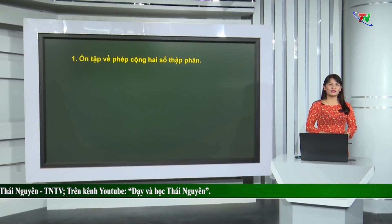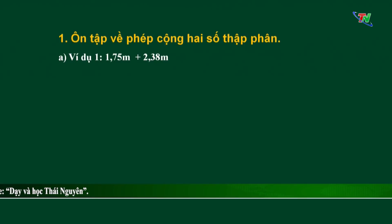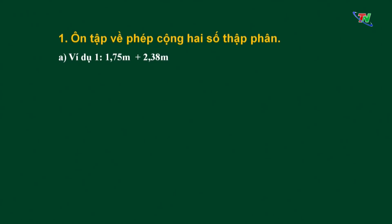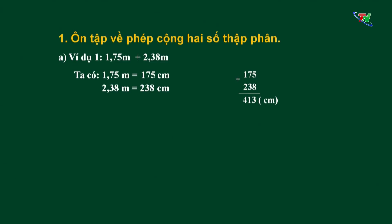Bây giờ chúng ta hãy bước vào nội dung thứ nhất: Ôn tập về phép cộng 2 số thập phân. Cô có ví dụ sau – Ví dụ 1: 1,75m cộng 2,38m. Để thực hiện được phép tính này, ta làm như sau: Ta có 1,75m = 175cm; 2,38m = 238cm. Bây giờ ta sẽ đặt tính cộng: 175 cộng 238 = 413cm. Từ 413cm, đổi ra đơn vị mét, kết quả là 4,13m. Vậy 1,75m + 2,38m = 4,13m.